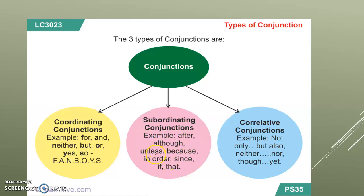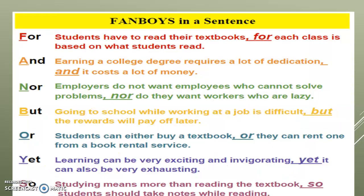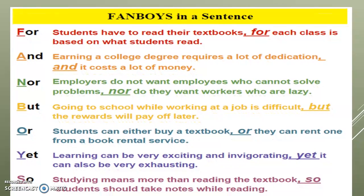Subordinating conjunctions help to connect sentences, phrases, words, and clauses. Correlative conjunctions come in the form of pairs, like: not only/but also, neither/nor, although/yet, though/yet.